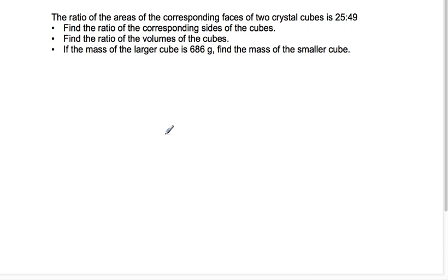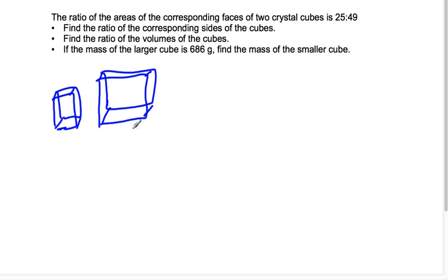The ratio of the area of the corresponding faces of two crystal cubes is 25 to 49. So pretend I have, here we go, two cubes, crystal cubes. So that means they're super fancy. And the ratio of those two cubes is 25 to 49. So the ratio of the areas. Then find the ratio of the corresponding sides of the cubes.